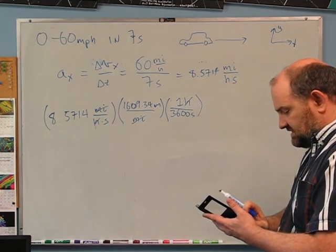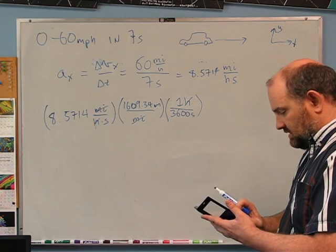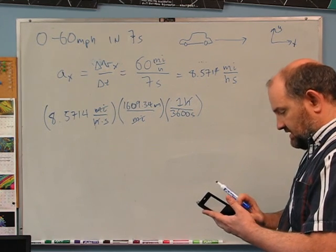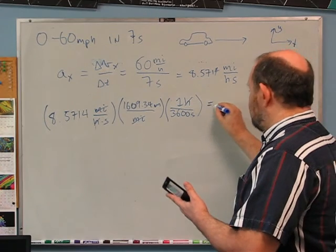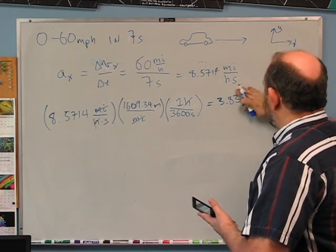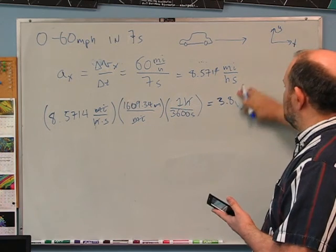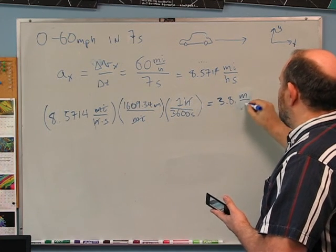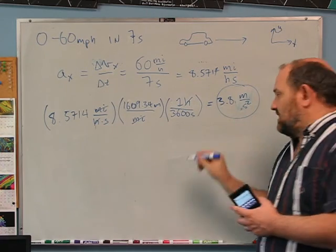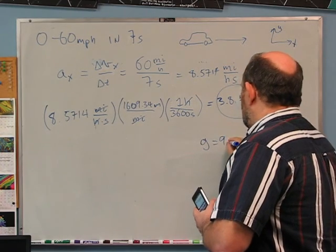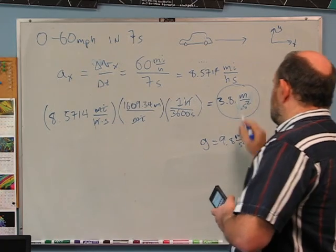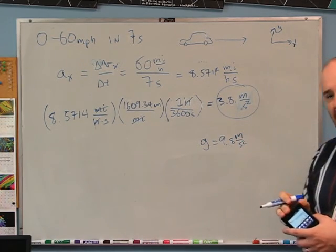Multiply by 1609.34 and divide by 3600 to get 3.83, which rounds to 3.8 meters per second squared to two significant figures. How does this compare to gravity? Gravity is 9.8 meters per second squared, so this is a little more than a third of gravity.